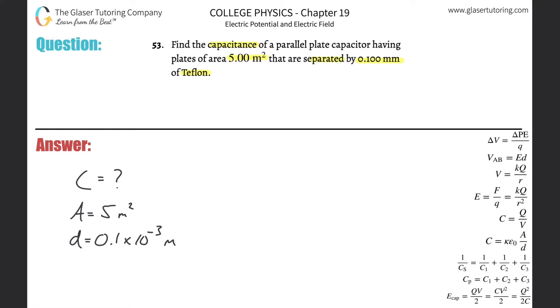They also tell us we're dealing with Teflon, meaning Teflon is the material sandwiched between the parallel plate capacitor. So if these are the two plates, you've got a whole bunch of Teflon between them. And that Teflon acts as an insulating material, and it has a dielectric constant value, meaning a k value, and that's about 2.1.